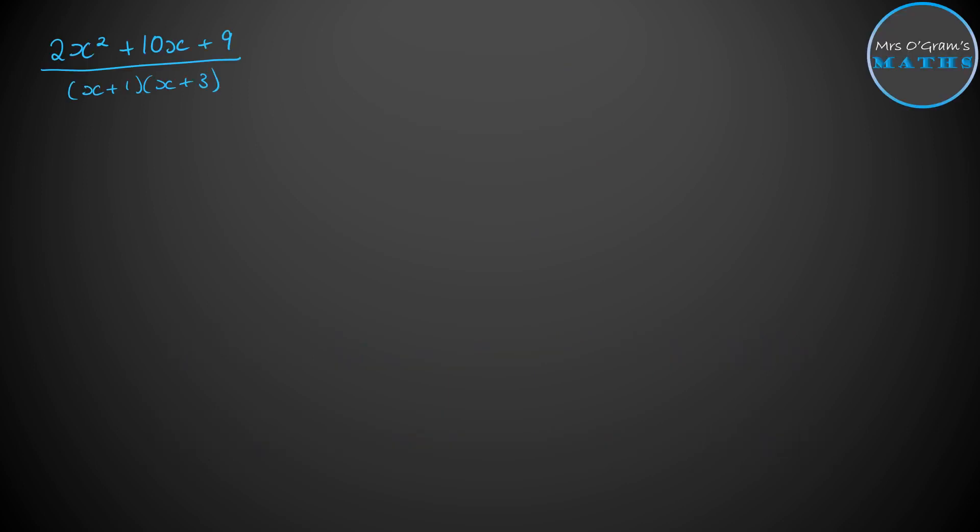Here's an example. And what we mean when we're talking about the order of the top and the bottom, or the degree of the top and the bottom, is the highest power of X on each one. So the highest power of X on our top is an X squared, and it's the same as on the bottom.